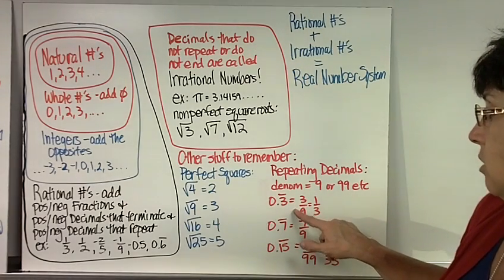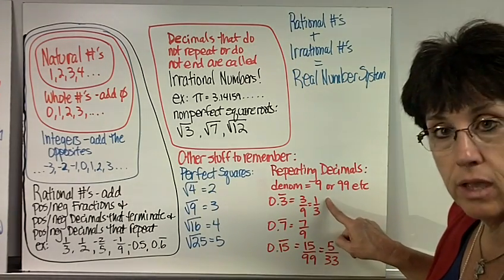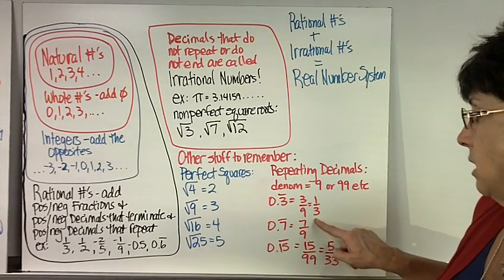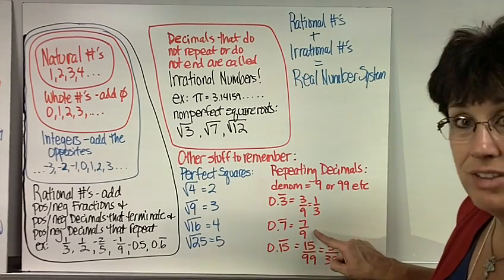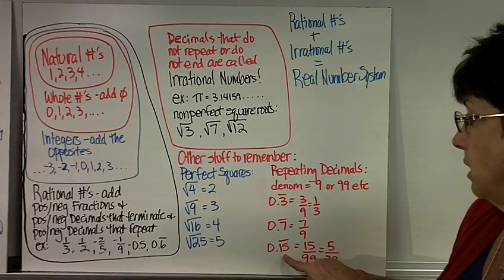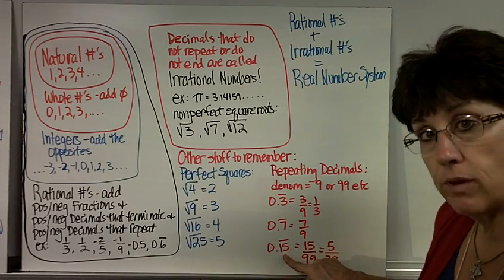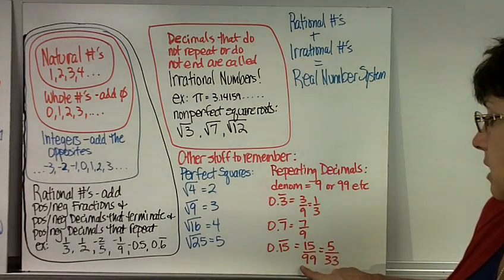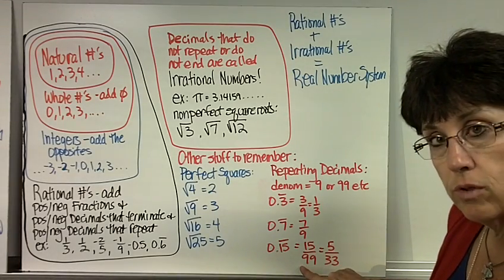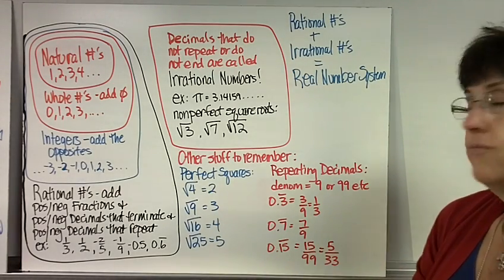So 0.3 repeating equals 3 ninths — oh, I can simplify that — 1 third. 0.7 repeating is just 7 ninths, can't simplify. 0.15 repeating would be 15 over 99, but I can divide both by 3 and get 5 over 33.